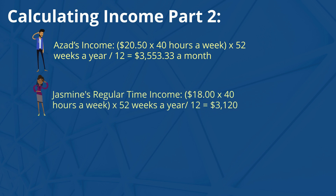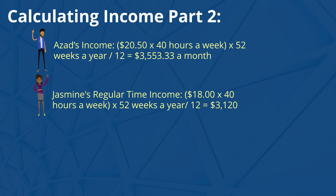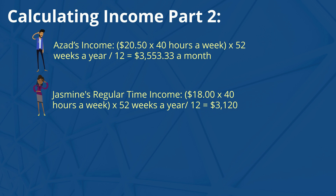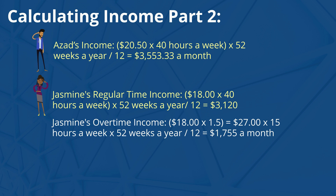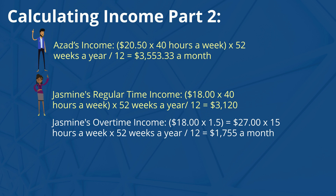Let's look at Jasmine's regular time income. $18 an hour times 40 hours a week times 52 weeks a year divided by 12 equals $3,120. Now let's take a look at Jasmine's overtime income. $18 times 1.5 for time and a half is equal to $27, times 15 hours a week, times 52 weeks a year, divided by 12 is equal to $1,755 a month.